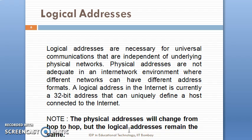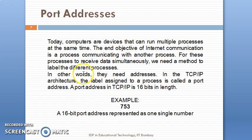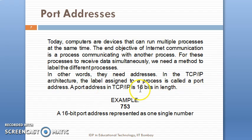An example of a logical address is the IP address, which is 32-bit for IPv4 and 128-bit for IPv6. Next is the port address. Today, computers can run multiple processes at a time. The end objective of IP is process communication with another process. In TCP/IP architecture, the label assigned to a process is called a port address. Here is an example of a port address, which is 16 bits.